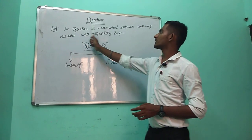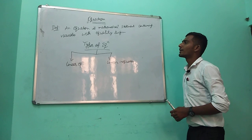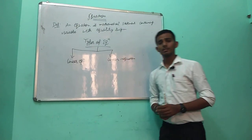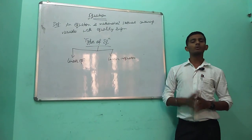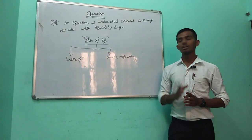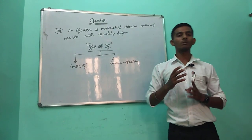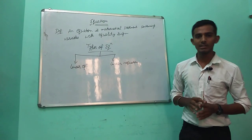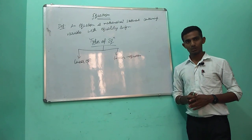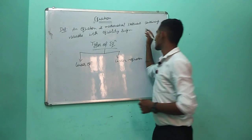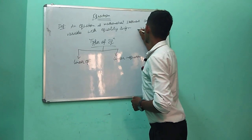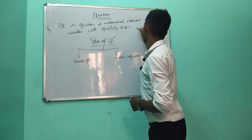An equation is a mathematical statement containing variables with the equality sign. For example, x plus 2 is equal to 5. That is an equation.